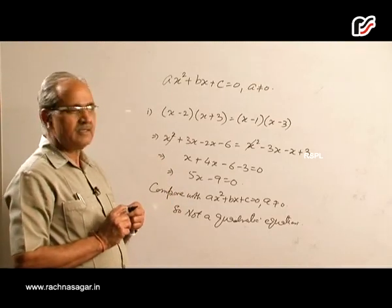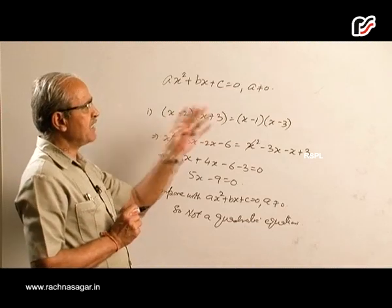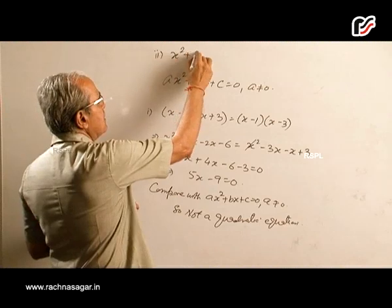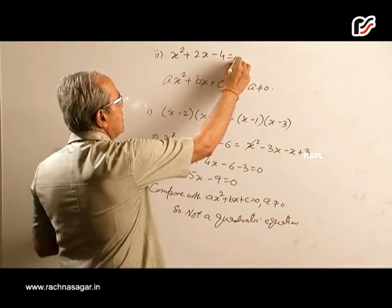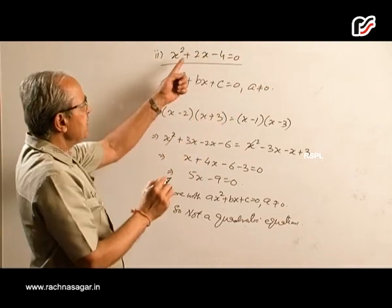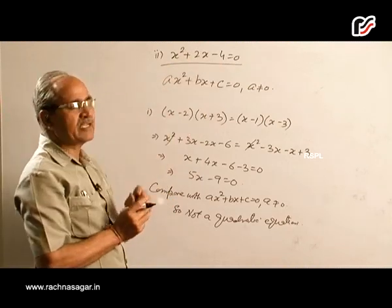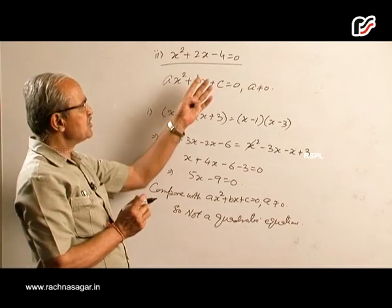In the same manner, if you look at the second part which is x² + 2x - 4 = 0, and compare this with the general form, we will notice this is a quadratic equation.